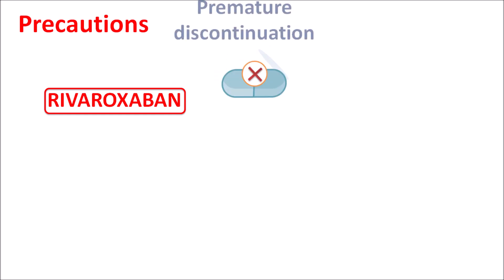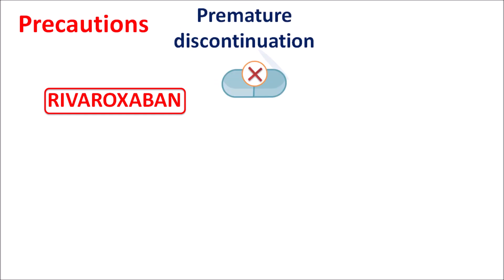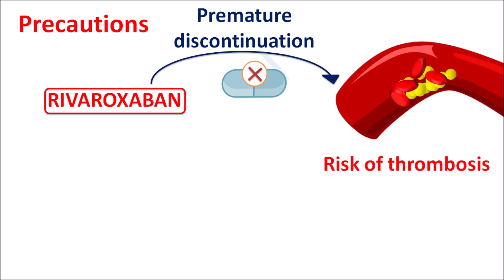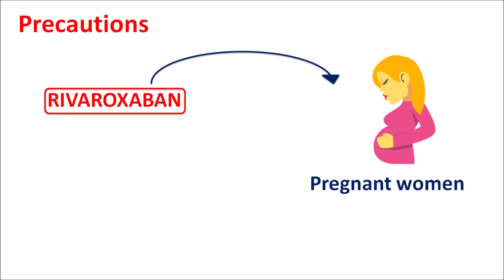Similarly, in the case of any premature discontinuation of the drug, thrombotic events may increase — the risk of thrombosis is more pronounced on sudden stopping of the dose before completing therapy. So there is a sensitive balance between the risk of bleeding and the risk of thrombosis: at high dose it increases the risk of bleeding, but when it is suddenly stopped it can increase the risk of thrombosis. This drug should not be given to pregnant women as it increases the risk of hemorrhage related to pregnancy.